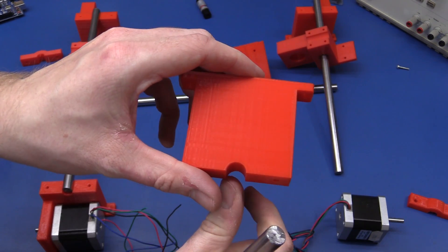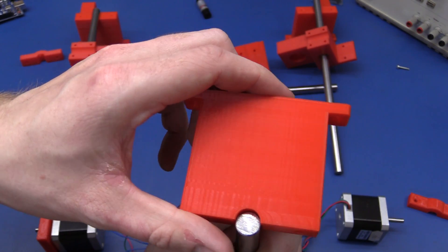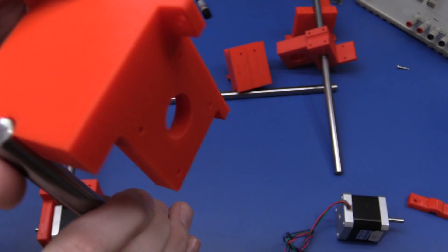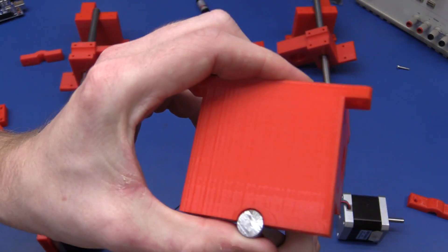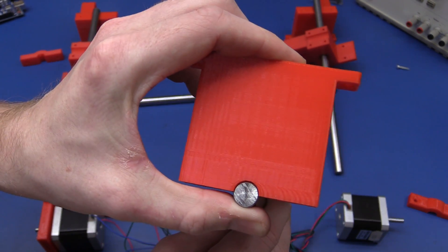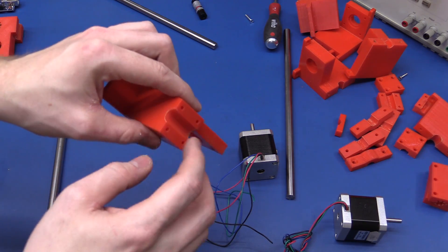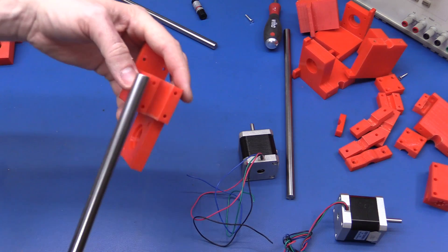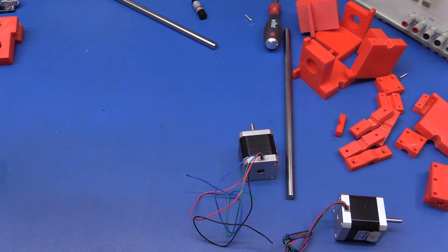So what I need to do is sand the corners of these brackets a little bit so that shaft will fit nicely into the hole there. So I went and sanded them so now the shafts fit a little bit better.